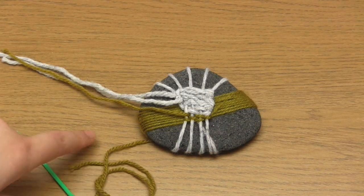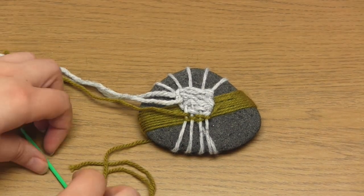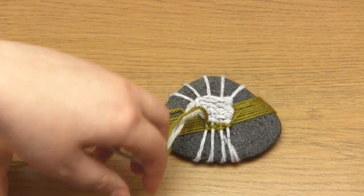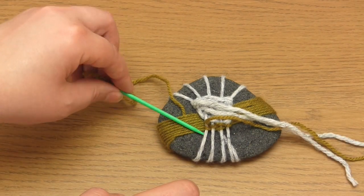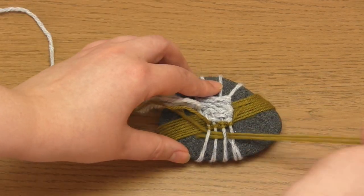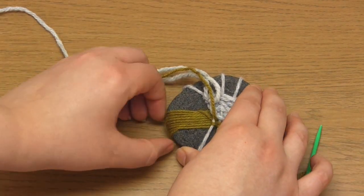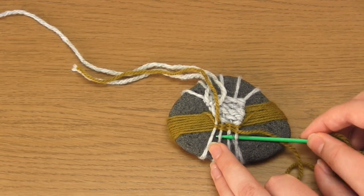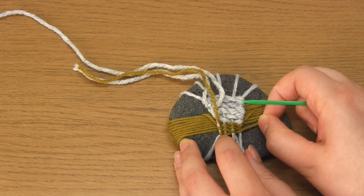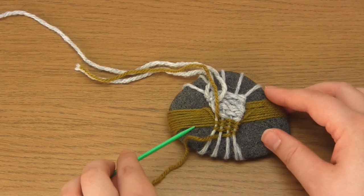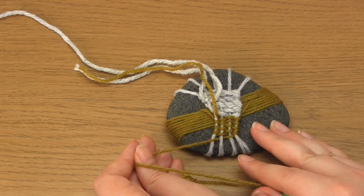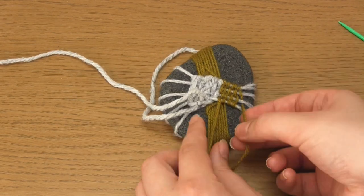Then with the back of the pebble now facing you, take the yarn up behind all of the horizontal yarn strands. Then weave back and forth through the grey strands just under where the previous green yarn tail has been woven. Weave at least two or three lines finishing on the same side as where the previous yarn tail ended. Then tie the two yarn tails together in a double knot.